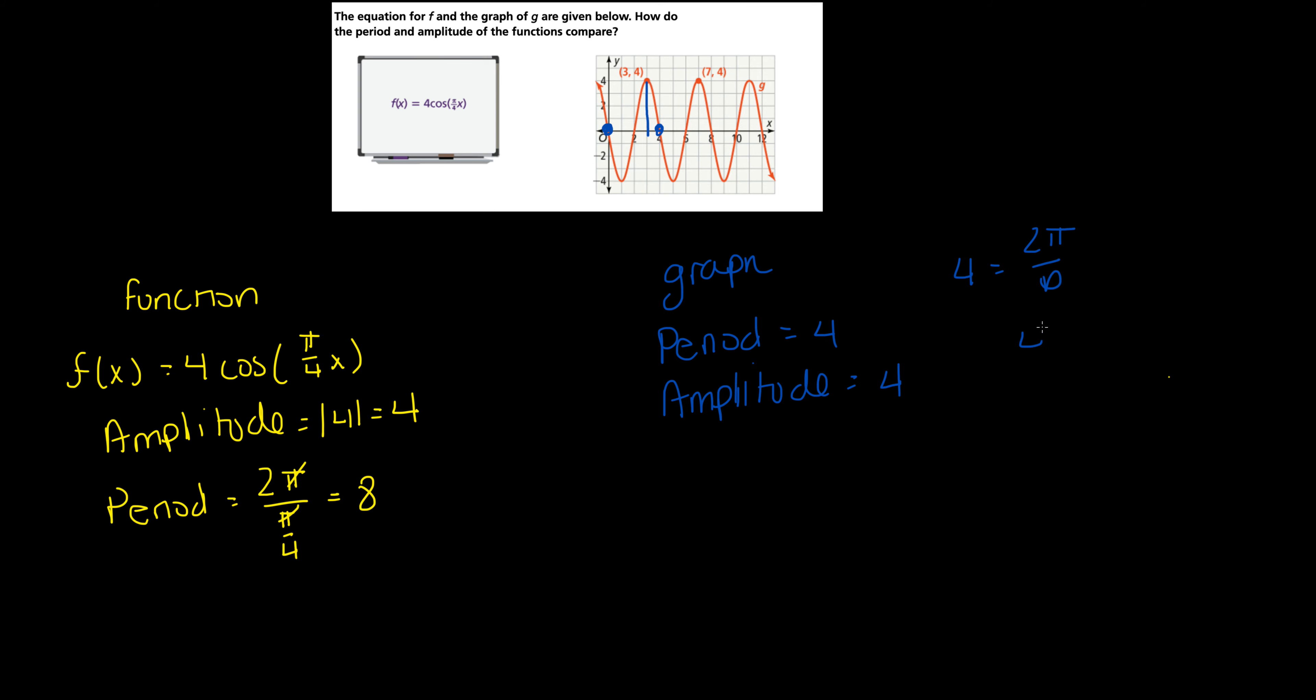So this would be 4b = 2π, which means that b in this case would equal π/2. So my formula here would be y = 4, my amplitude.